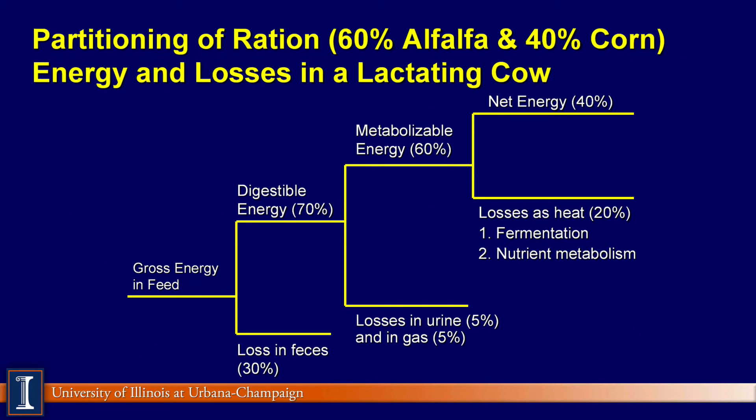Let's look at how energy is partitioned, using a typical 60% alfalfa, 40% corn-based diet for a lactating cow. We start on the left side with gross energy — a pound of straw and a pound of corn would have about the same gross energy. Once we put it through the cow's digestive system, we arrive at digestible energy: if we take what is lost in the manure or feces, what's left over is called digestible energy. In a lactating cow, about 30% of the total energy ends up in the manure. Therefore, anything we can do to increase feed digestibility — forage quality, feed processing — is a winner.